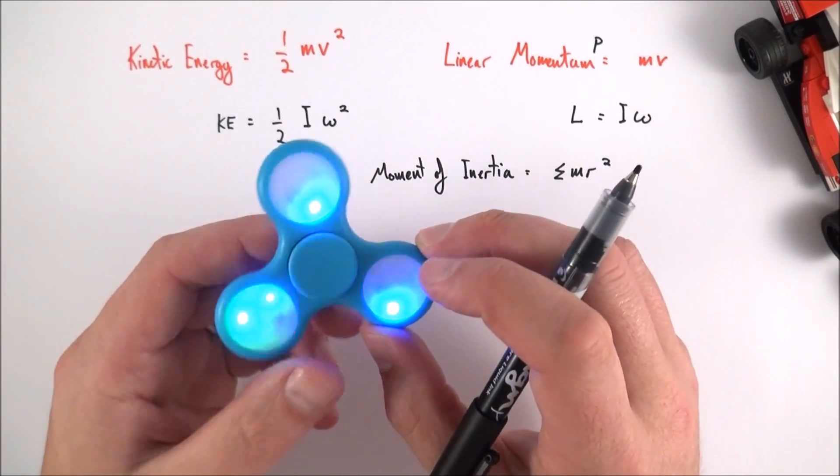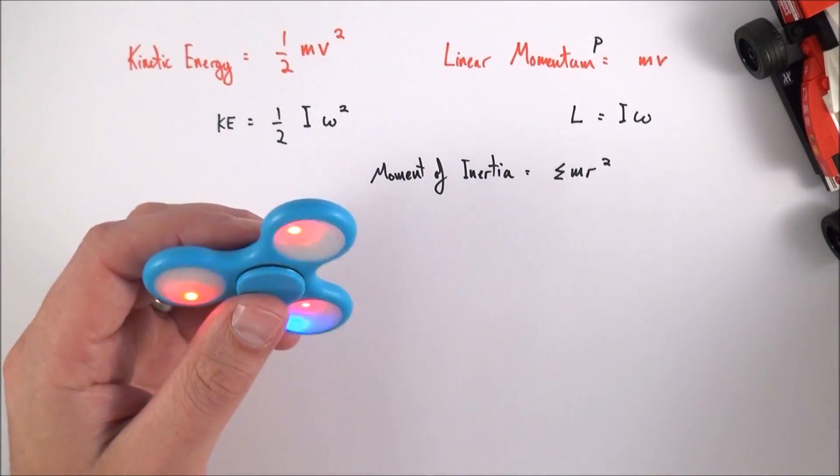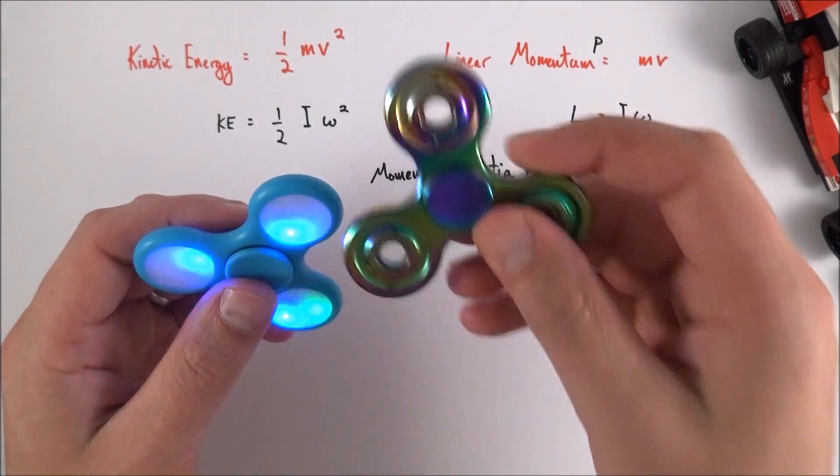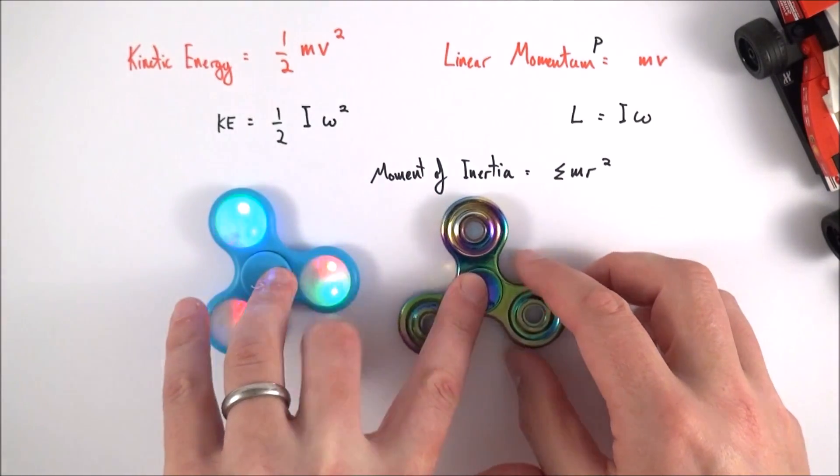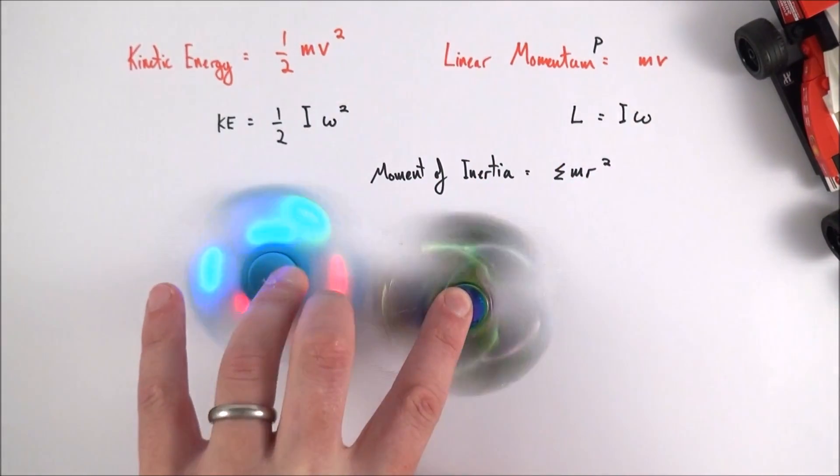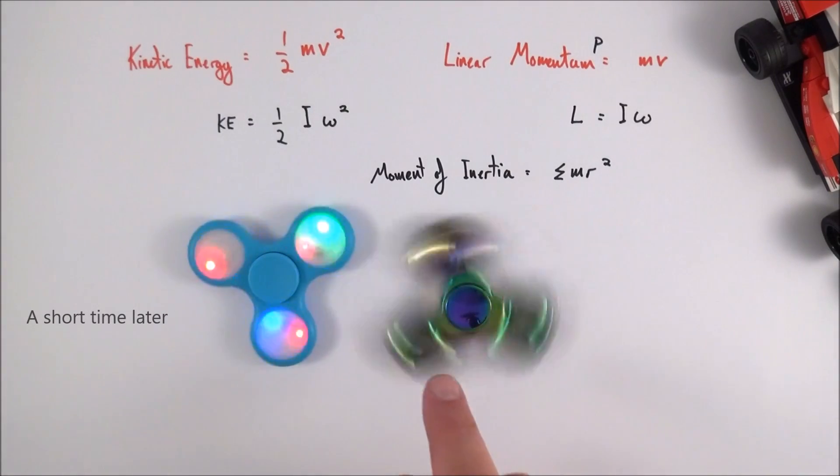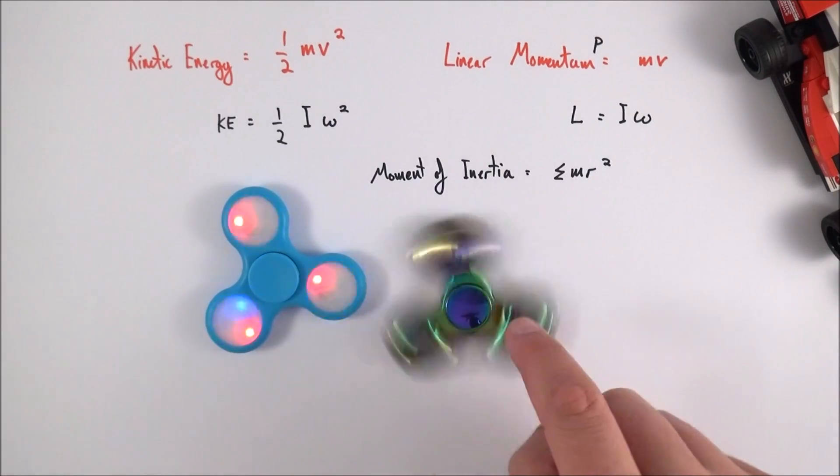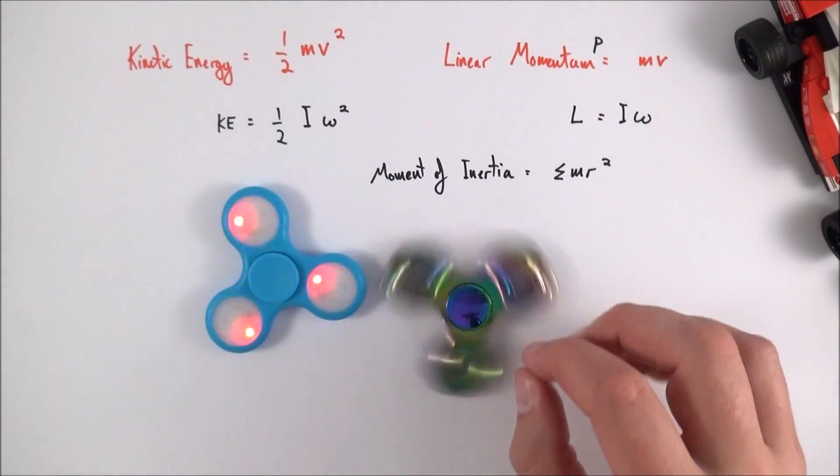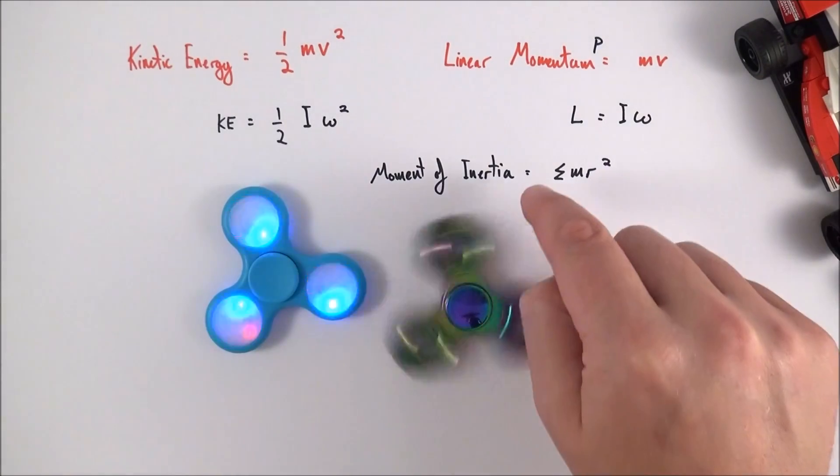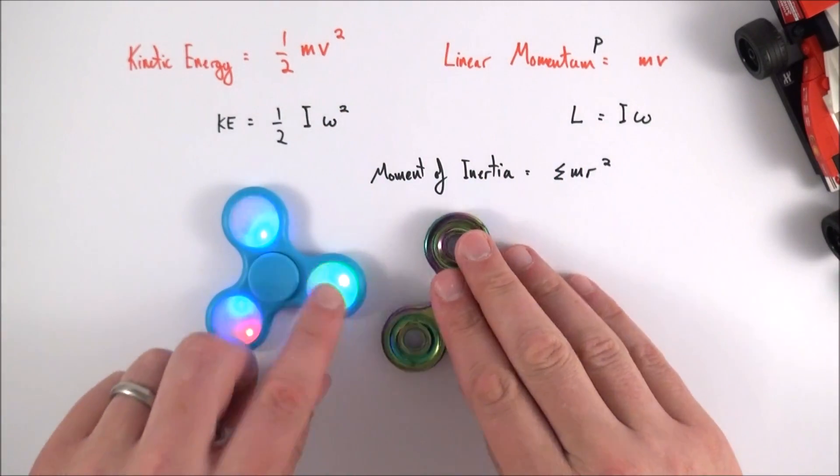So that means what we need to do is think about increasing the mass and making the mass as far away from the center as possible. And in actual fact if you have a metal fidget spinner, I've got one over here, even though the bearings are of similar quality what we'll find is that these two things will spin for a very different amount of time. So what you see is that even though this one here has stopped spinning this one here just keeps going and going. The bearings are similar quality but because this has got more mass it's got a greater moment of inertia and therefore a greater amount of kinetic energy at the start.